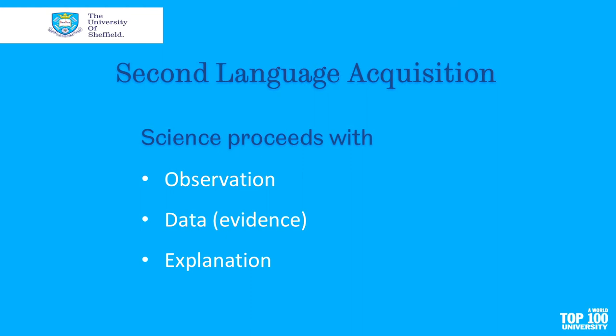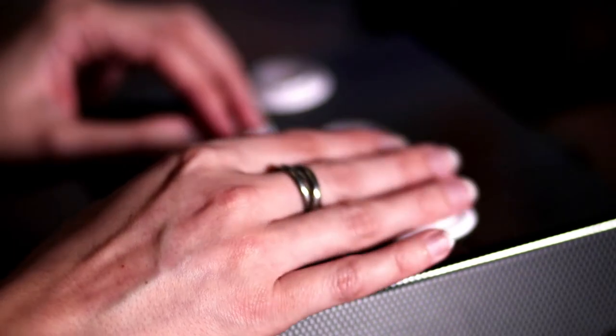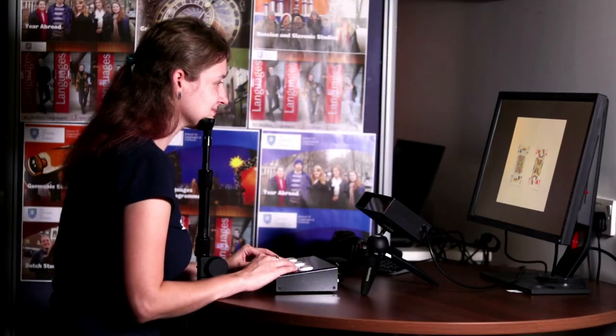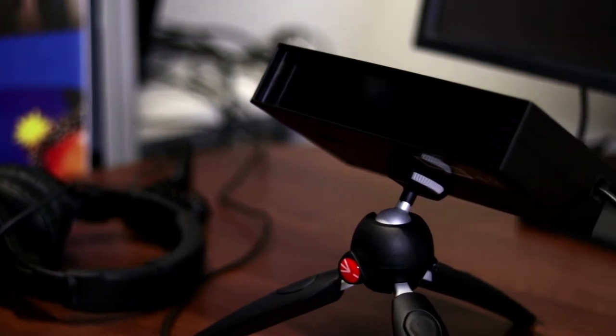Second language acquisition investigates these questions using experimental scientific methods. Just like other science subjects like physics and biology, it follows steps in scientific investigation. Firstly, it makes observations about a particular phenomenon. Secondly, it collects data through carefully controlled experiments. Often this involves using psycholinguistic experimental tools — for example, measuring reaction times to a stimulus by pressing a button, or eye tracking to observe learners' eye movements on a visual display. Following this collection of empirical data or evidence, the researcher can draw principled conclusions, deriving reasons or explanations that underlie the data that have been collected.